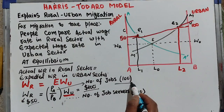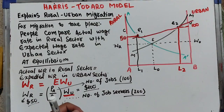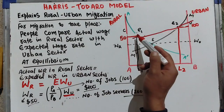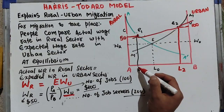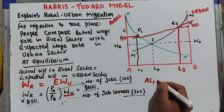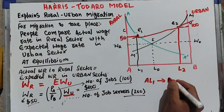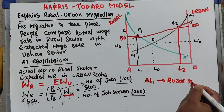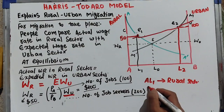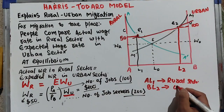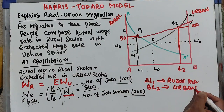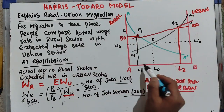PA upon PB represents the probability of getting a job in the urban sector. With 100 jobs and 200 job seekers, the condition holds at equilibrium. At point E1, the people up to L1 are in the rural sector, and the people represented by DL2 are in the urban sector. The distance from L1 to L2 represents a distinct group of workers.